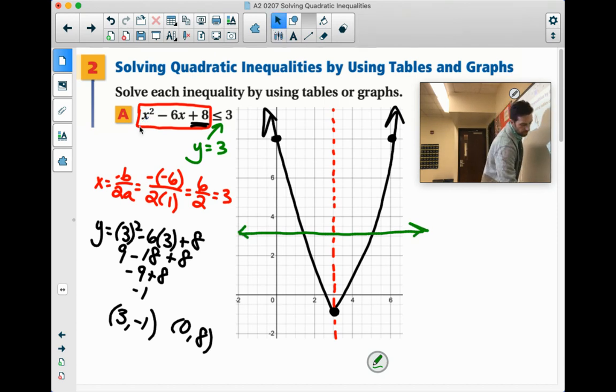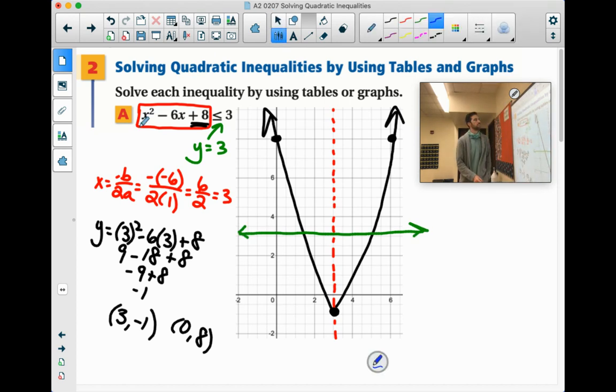So here's kind of what this question is asking. They're saying, when is this parabola less than y equals 3? So look at our parabola. Look at our y equals 3 line. The spots where this parabola is less than that would be all of these points.